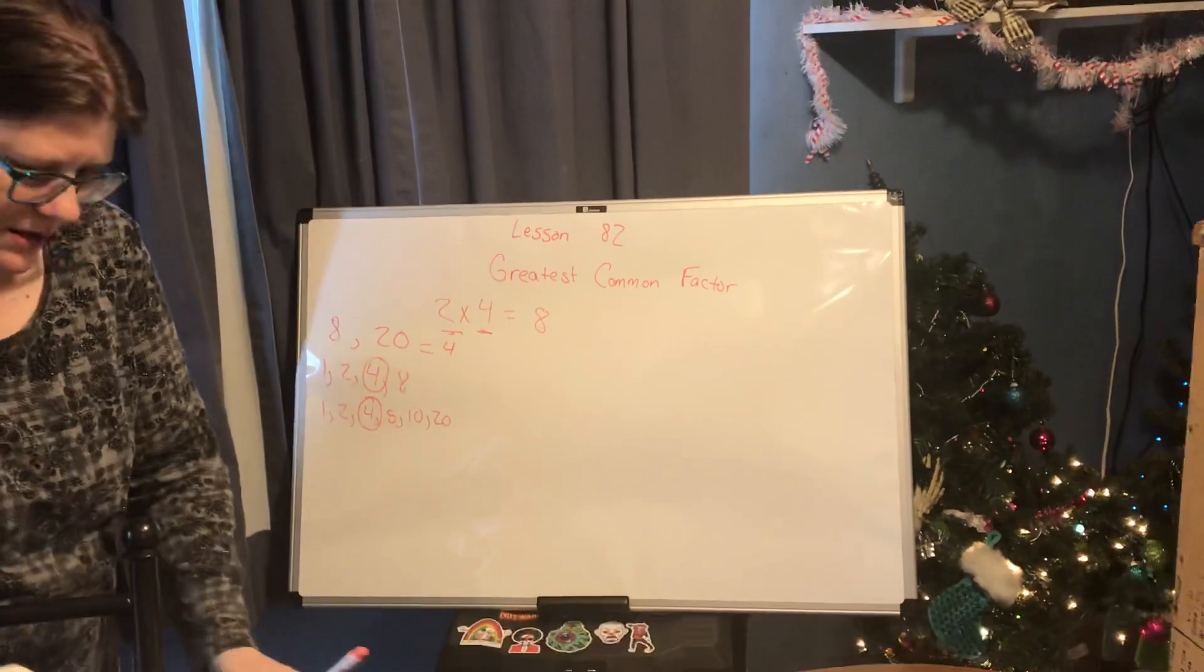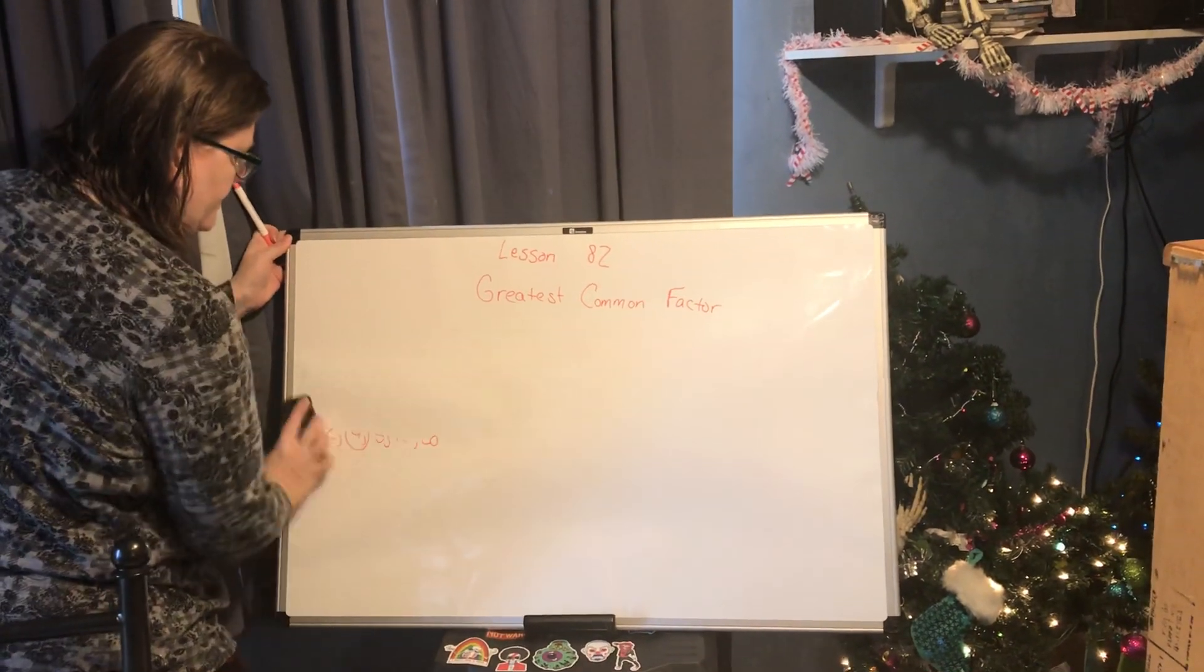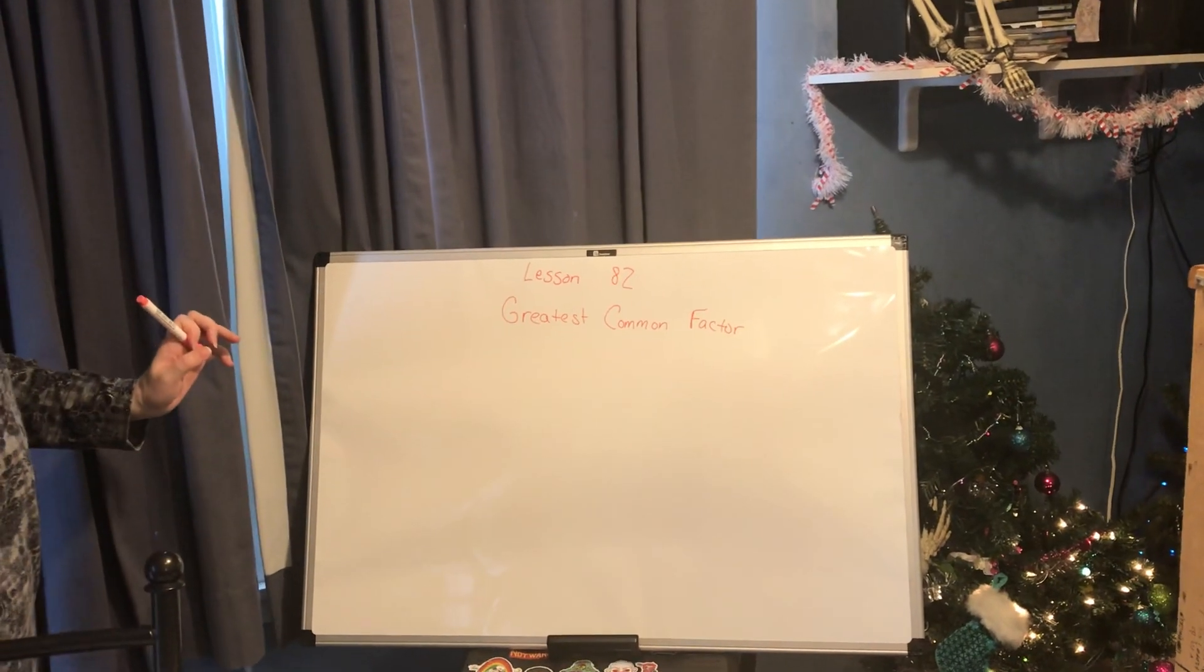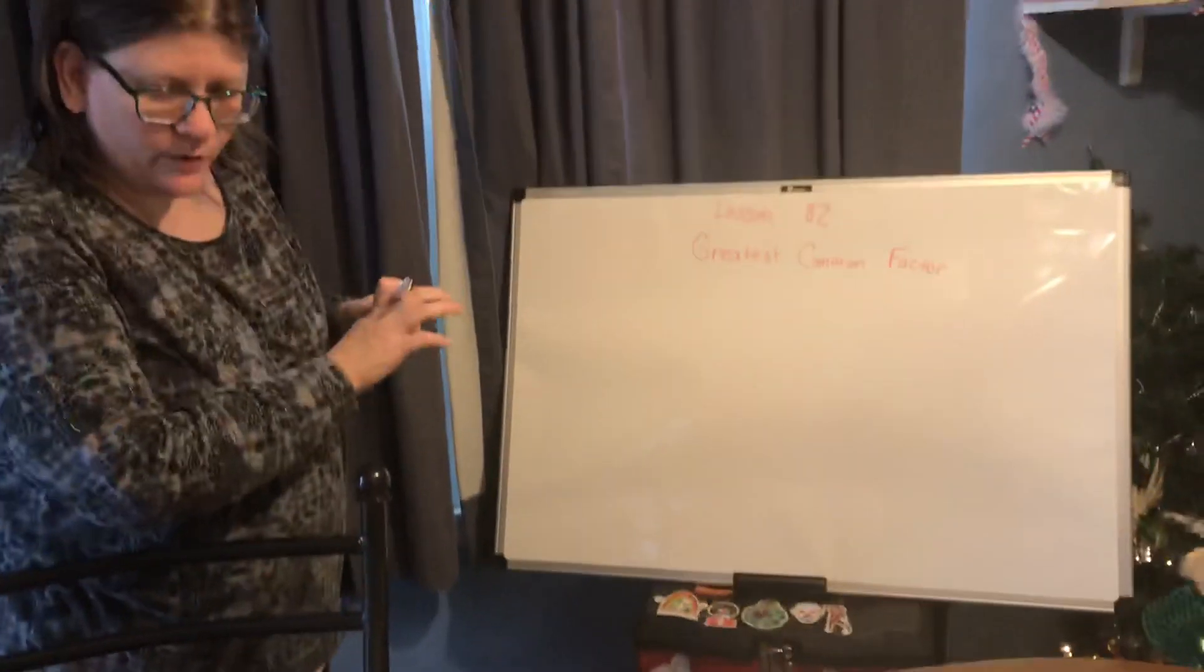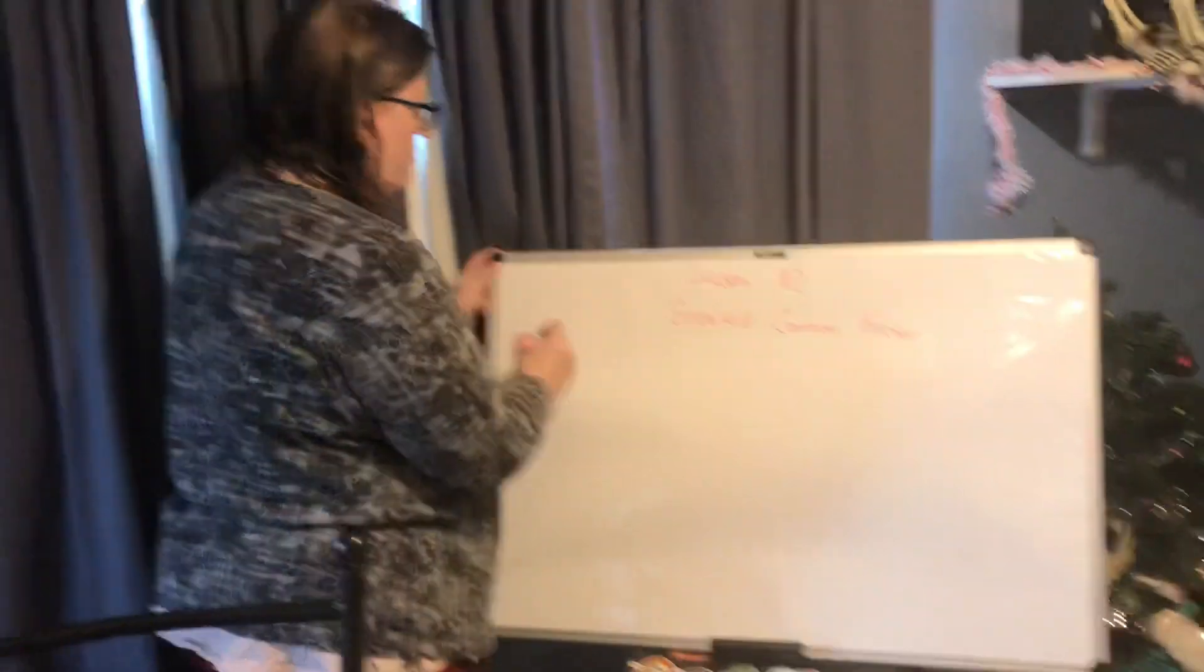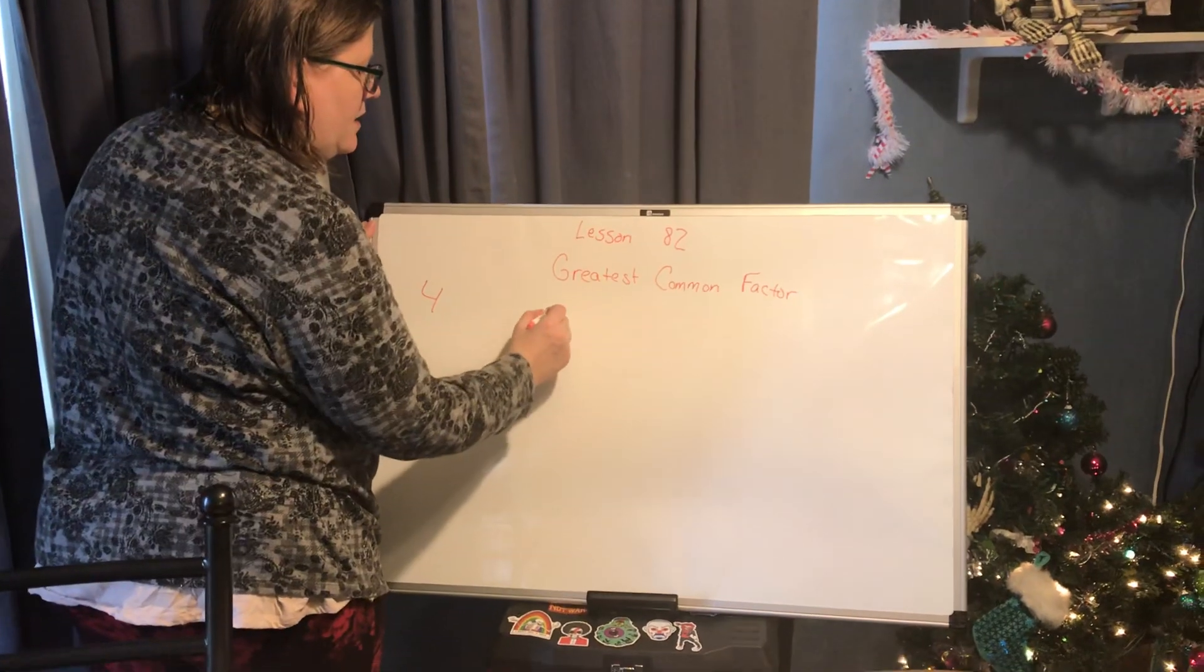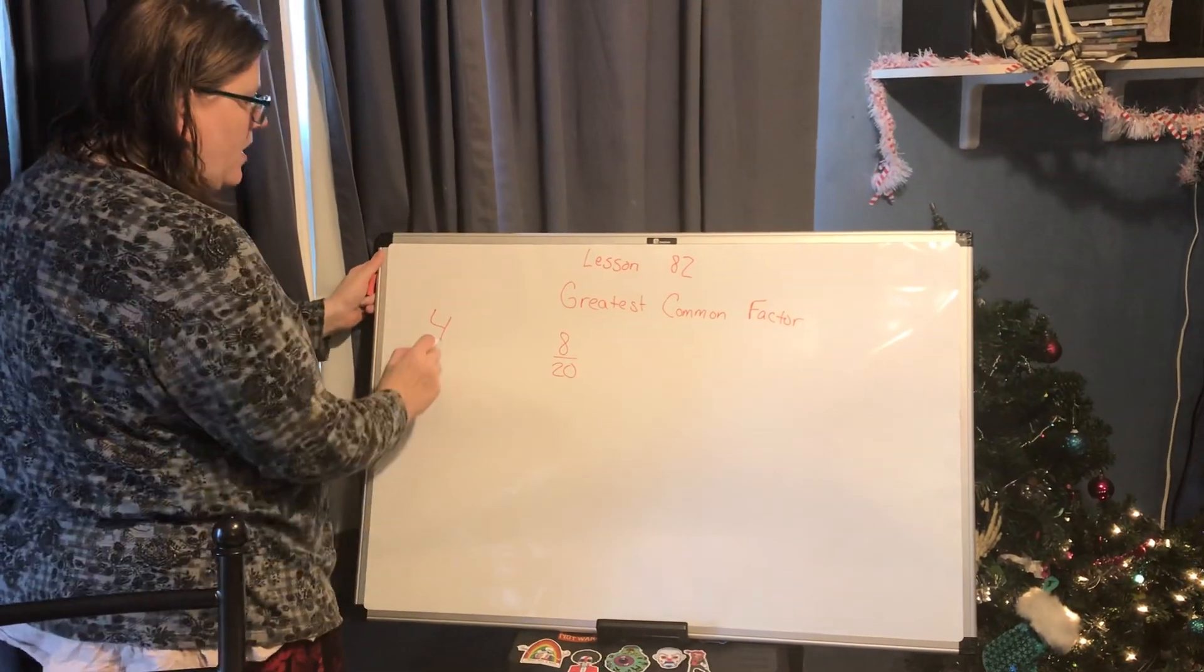Let's look at another example. We can turn the page. Example number two says use the greatest common factor of 8 and 20, which we've learned was 4, to reduce the fraction 8 over 20.